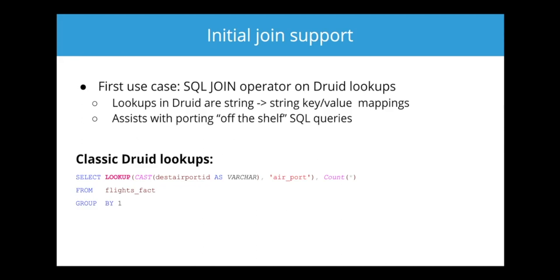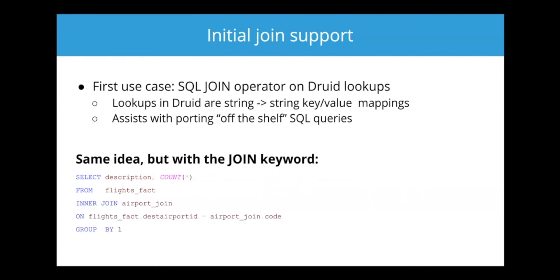The first use case we want to tackle is being able to do real SQL joins against these classic Druid lookups. The same query idea, but now with the JOIN keyword. So now we have flights_fact INNER JOIN airport_join ON flights_fact.dest_airport_id = airport_join.code.